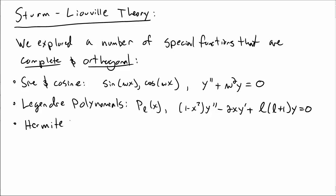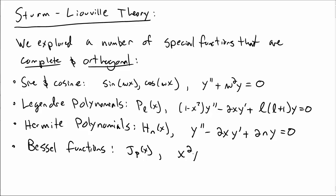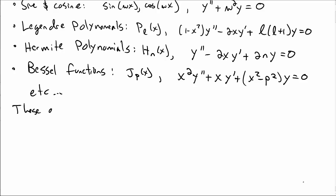To name a few others, we talked about Hermite polynomials, which are solutions H_n to the differential equation y'' - 2xy' + 2ny = 0. And also Bessel functions, which show up in a variety of contexts. We'll stick with the J_p Bessel functions of the first kind, which are solutions of x²y'' + xy' + (x² - p²)y = 0. There are lots of these different special functions, all solutions to some special differential equation.